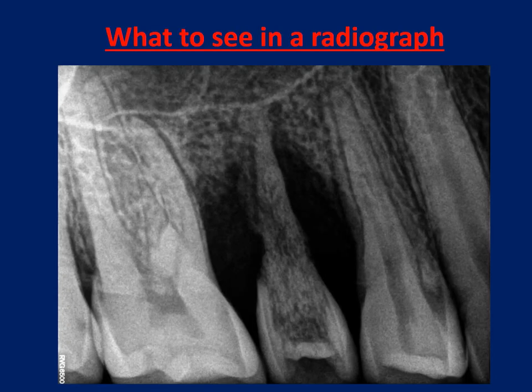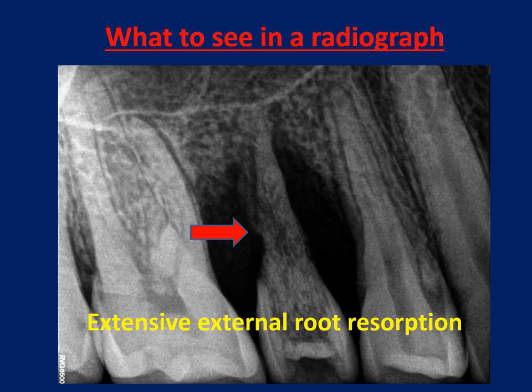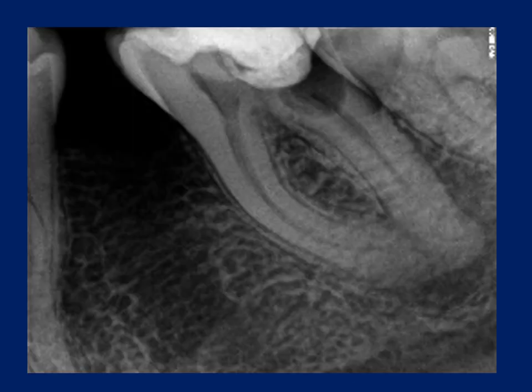What to see in a radiograph: It is important that we take a diagnostic X-ray because we have to know the status of the tooth before starting work. For example, this tooth has very severe extensive external root resorption, which is a contraindication for endodontic treatment. Here, a carious lesion is going to cause a perforation, and in the apical region there is sclerosis. It is important to assess the value of the tooth before beginning endodontic treatment.